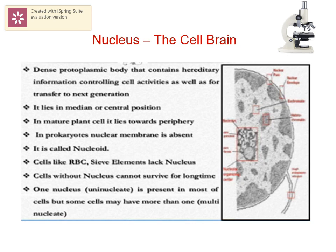The very important cell organelle is the nucleus — also called the brain of the cell. Usually it is in a central position, but in plant cells it lies towards the periphery. In prokaryotes, nuclear membrane is absent; instead, the central region where hereditary material is present is called the nucleoid. Some cells, like RBCs and sieve elements, lack a nucleus.